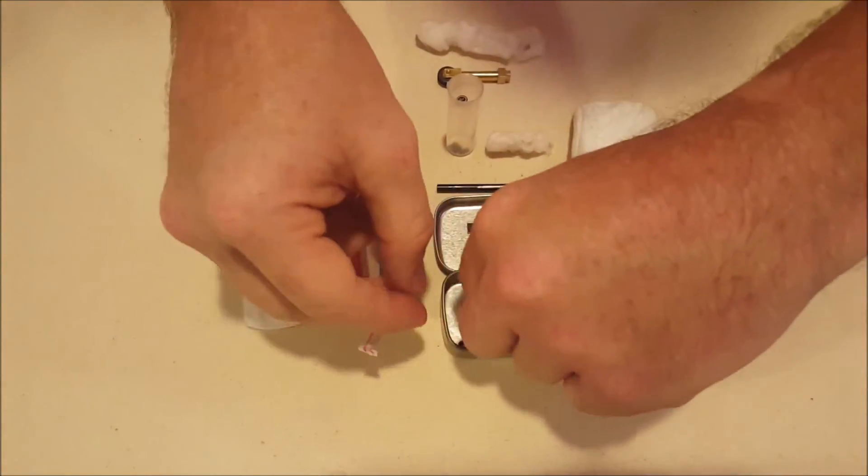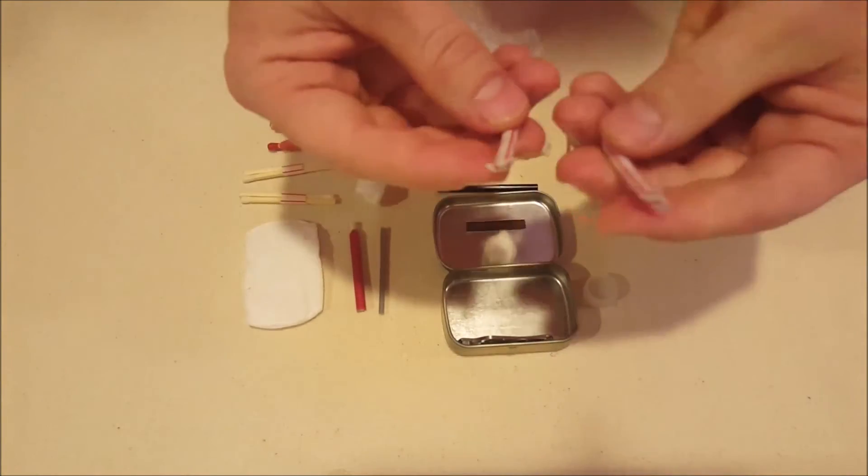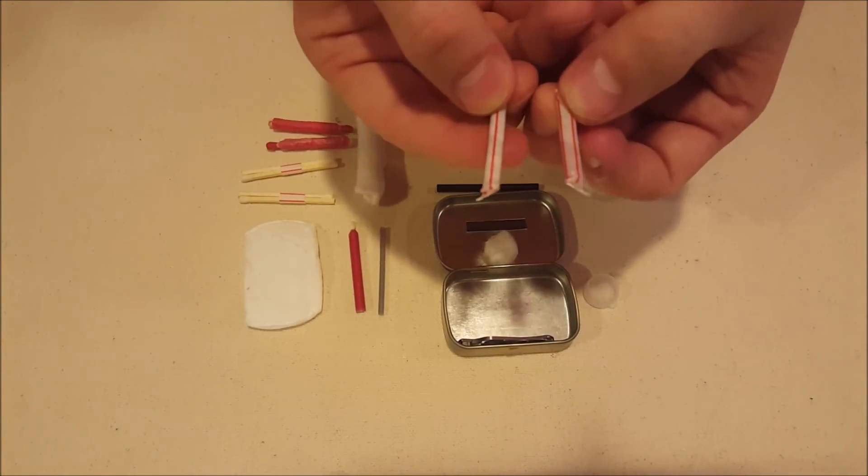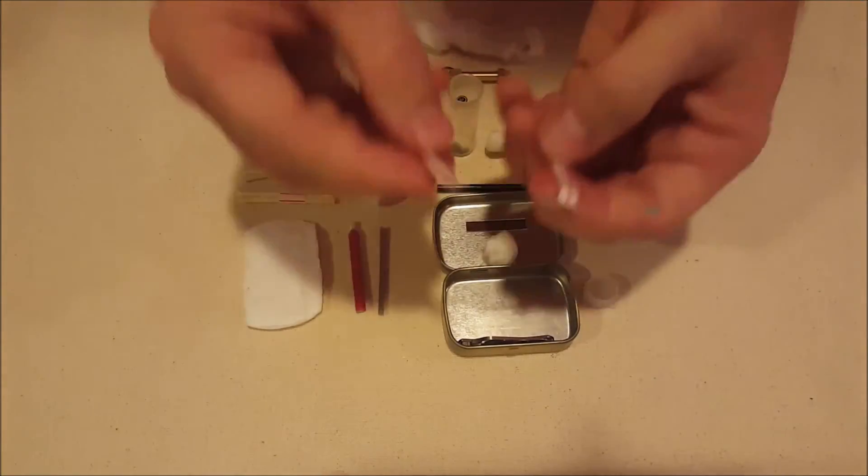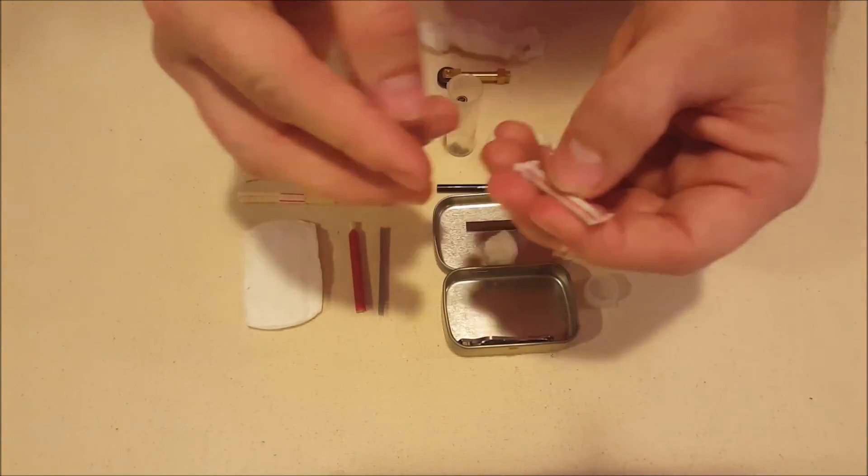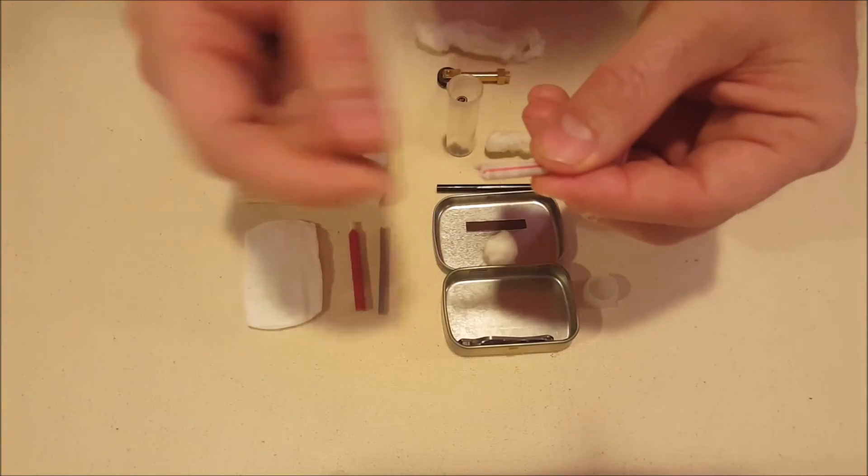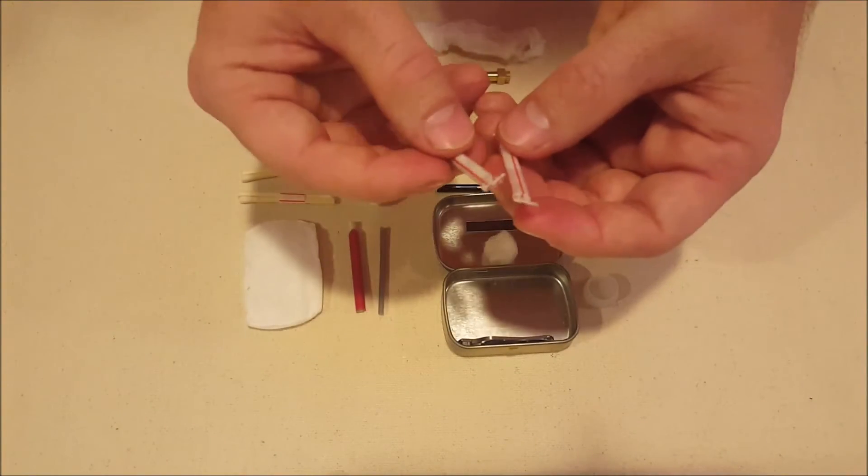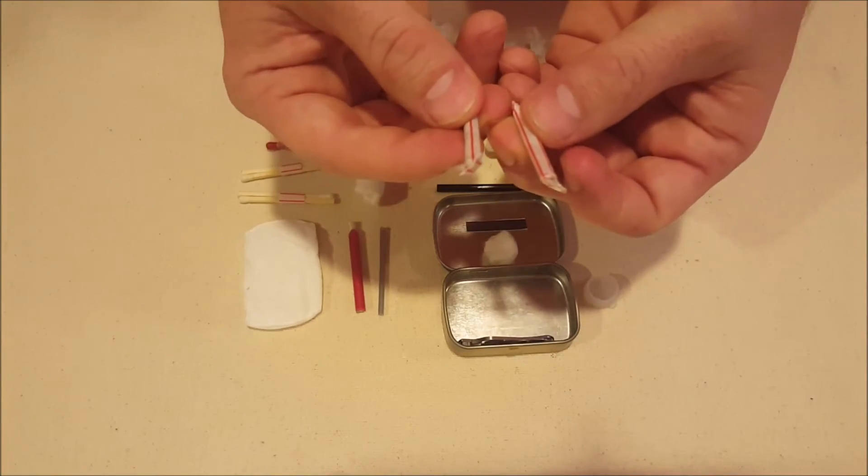These two items here are just some straws and packed in the straws are some petroleum jelly and cotton balls. Again, great fire starters. You can just cut the ends of these off, peel some out, sort of flare it out, get a spark to it and just toss this on some tinder and it will work really well.